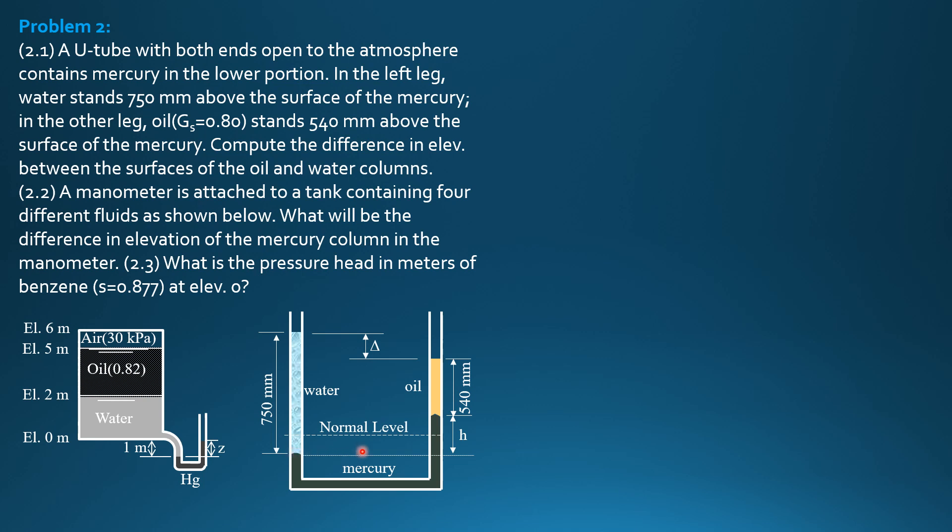Then this point and that point, same level, same pressure, so we jump across. Then subtract specific weight of mercury times H minus specific weight of oil times 0.54 meter equals the pressure here, which is zero.